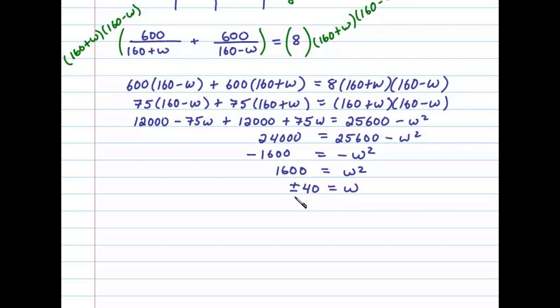Since W represented the speed of the wind, we'll disregard the negative answer. And so, the speed of the wind was 40 miles per hour.